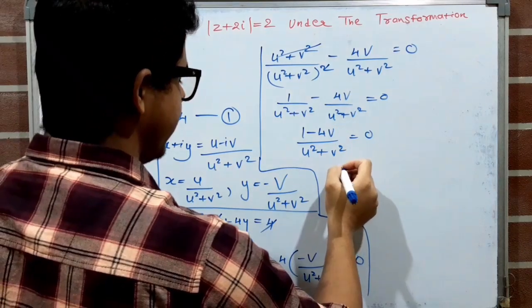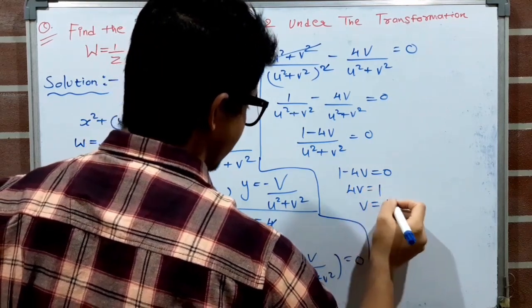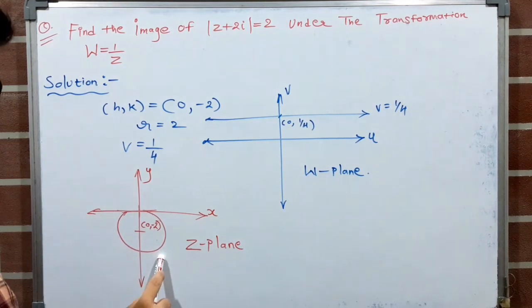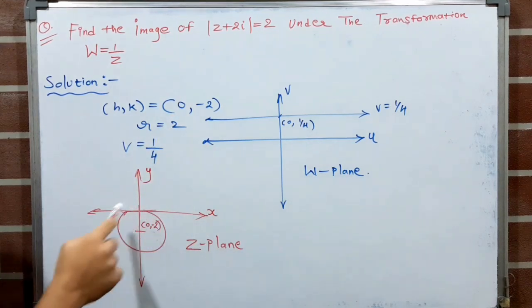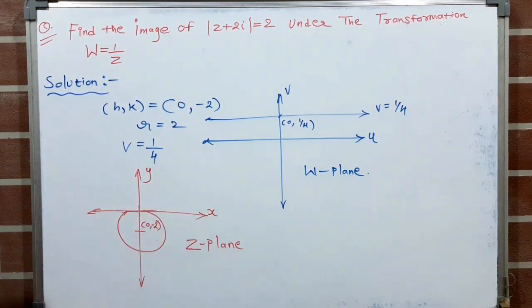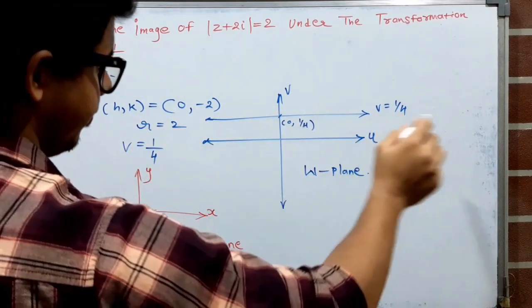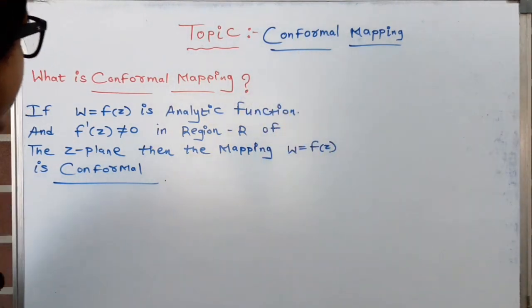Since the denominator cannot be zero, the numerator equals zero: 1−4v=0, giving v=1/4. So this is the equation of a horizontal line v=1/4 in the w-plane. The circle with center (0,−2) and radius 2 in the z-plane is mapped to the horizontal line v=1/4 in the w-plane by the inversion transformation.